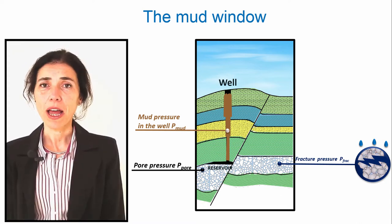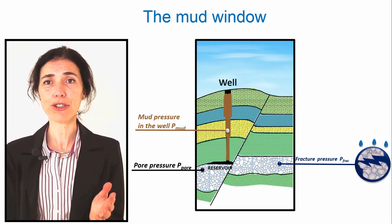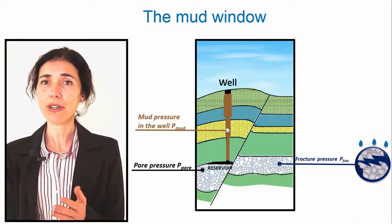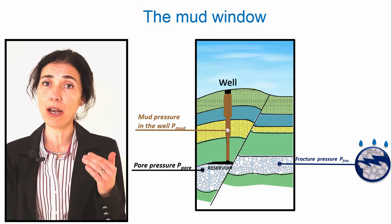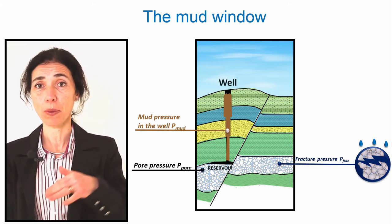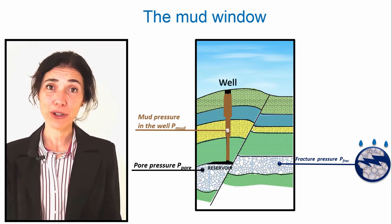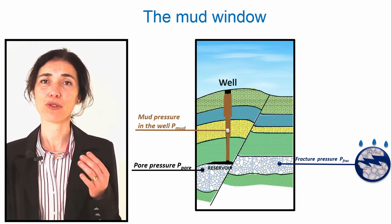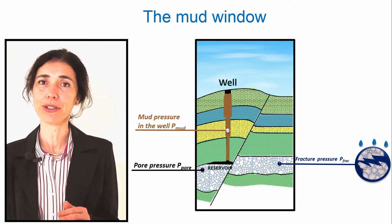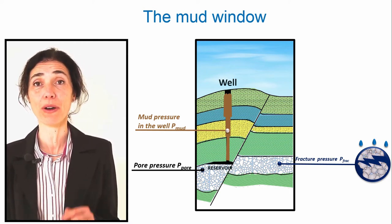A fluid always flows from a high pressure point to a lower one. Therefore, if the mud pressure is below the pore pressure, the formation fluid will flow and enter the well. A kick will occur! Therefore, the mud has to be designed to generate a higher pressure than the pore pressure in order to avoid a blowout.